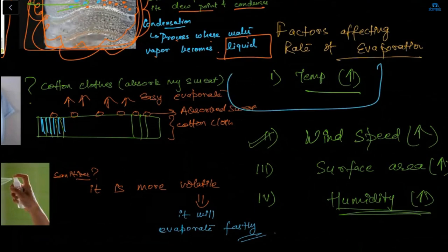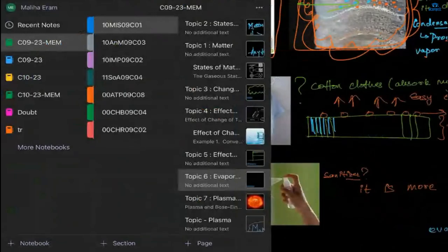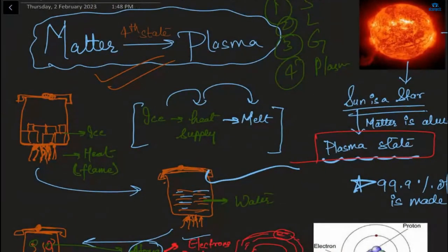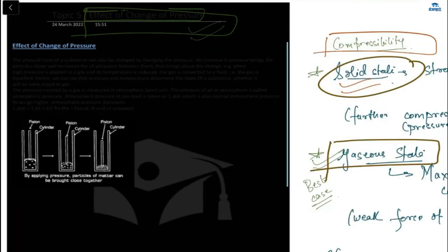If temperature increases, the rate of evaporation increases. Plasma is gas in its ionized state — it is the fourth state of matter. When you heat ice, it converts to water; heat water further and it converts to gas; keep heating the gas and the atoms — containing electrons, neutrons, and protons — form ions, giving an ionized state known as plasma.